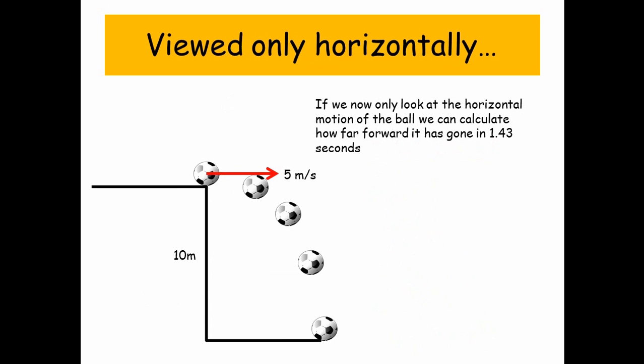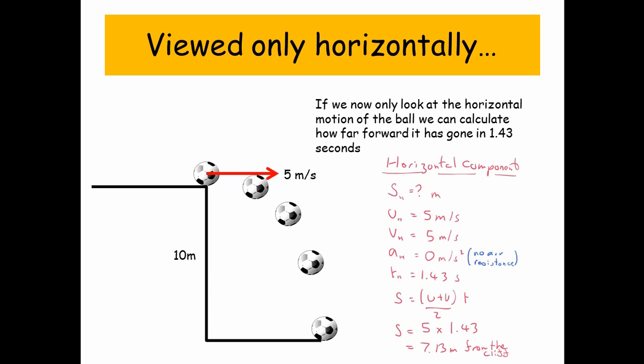So now let's view only in the horizontal. If we now look at the horizontal motion of the ball, we can calculate how far forward it's gone in 1.43 seconds. And remember that 5 meters per second doesn't change. So the horizontal component, we don't know S, but we want to find it out. The initial velocity is 5 meters per second, as is the final velocity, 5 meters per second, because there's no air resistance. So any acceleration in the horizontal plane is actually 0. There is no acceleration. We know from the previous slide that the time it takes for the ball to drop is 1.43 seconds. So S equals U plus V over 2T.